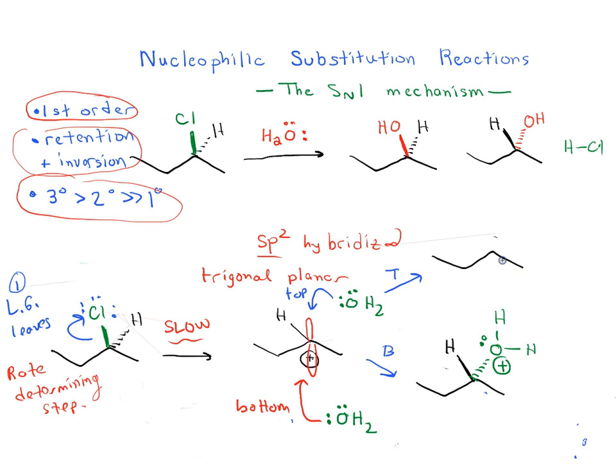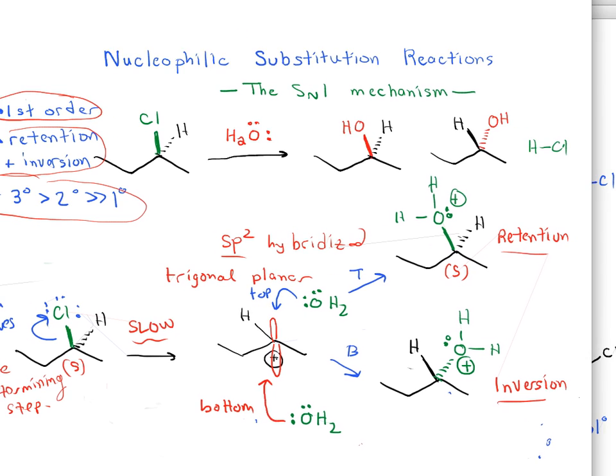If we attacked from the top face, we would get our OH2 as a wedge with a positive charge and a dashed hydrogen. Notice this configuration. We started off with this being S. If it attacks from the top, in our example, this is also S - this is retention. If it attacks from the bottom, this would go with inversion. This is how we get two different isomers from this process going through this carbocation because it has a 50-50 chance of going from the top or from the bottom. We have a mixture of retention and inversion.